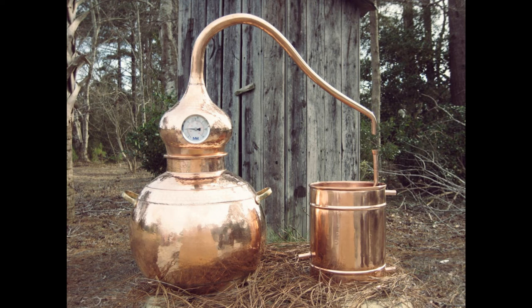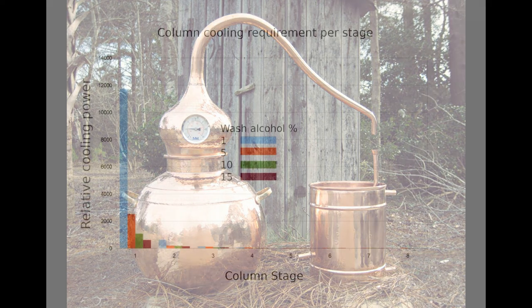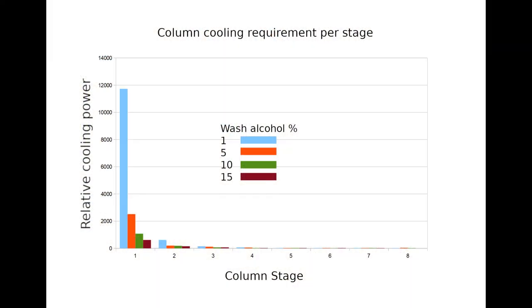That need for varying heater power does not arise in continuous distillation because the wash concentration is constant. Another advantage of continuous distillation is that you have a choice of whether to add wash to the column as vapour or liquid, whereas in batch distillation it has to be added as vapour — and this choice turns out to be consequential. Returning to the diagram of heat loss per stage, the higher stages are adiabatic while the lower stages are highly exothermic, and between these two is what I will call the adiabatic transition zone.